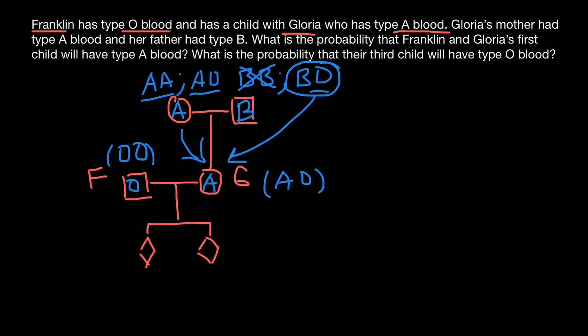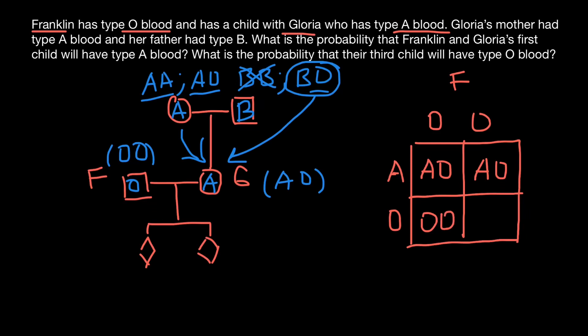For example, the genotype of Franklin here on the top and here on the side Gloria. So AO. And if we build a simple Punnett square, we can predict what variants of the blood groups they may have in their children. So AO here, AO here, OO and OO.